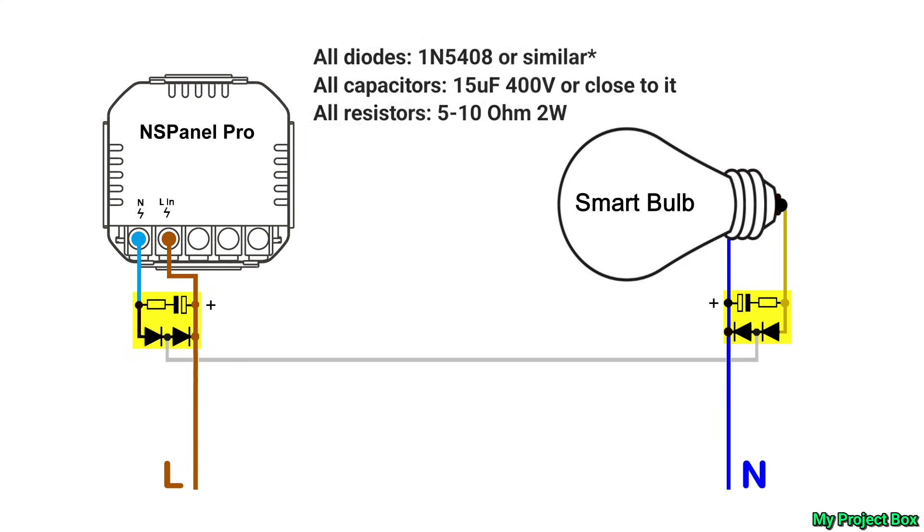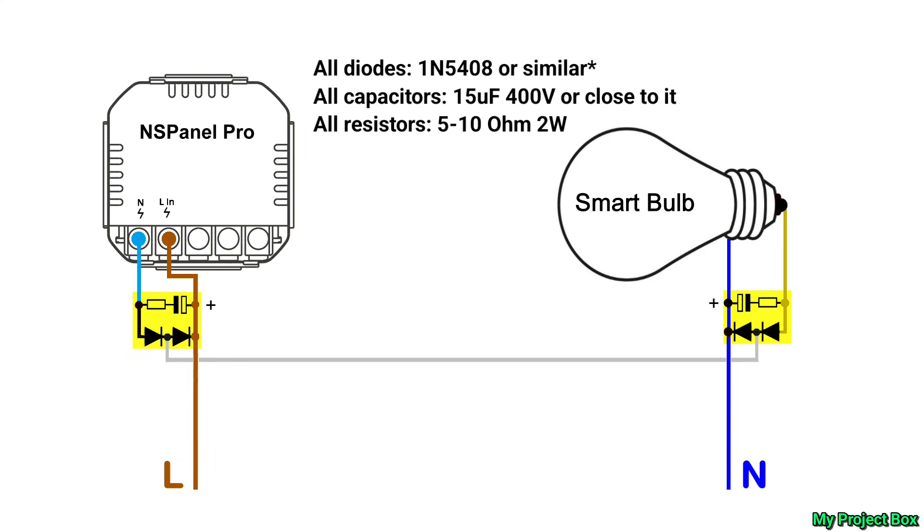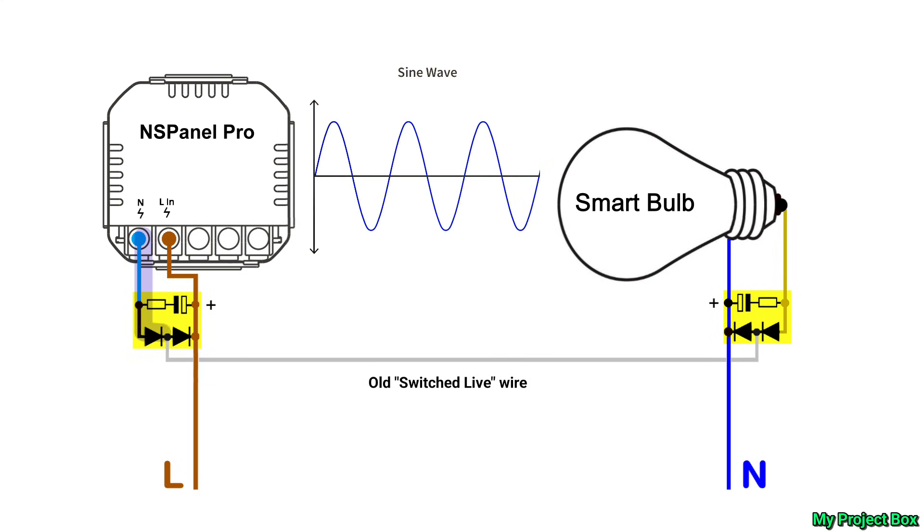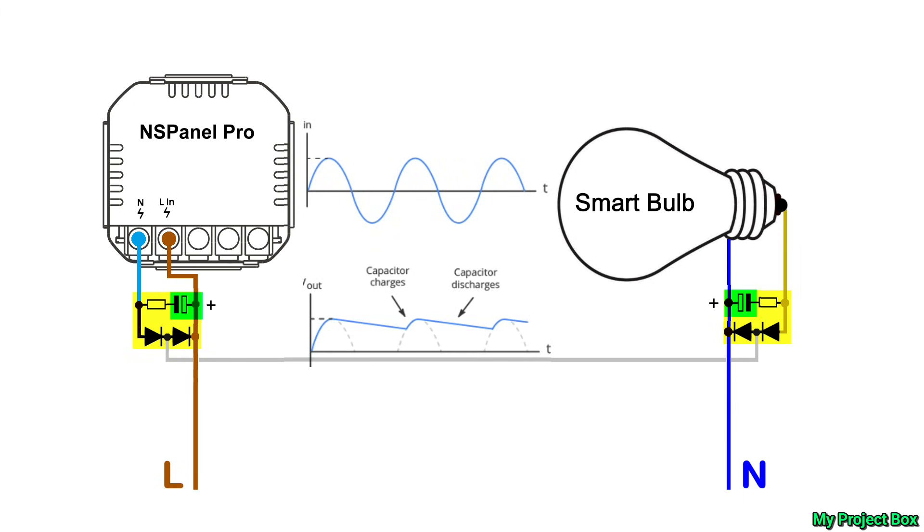Here is my brand new prototype circuit specifically designed for the NS Panel Pro. It allows it to be powered without a neutral behind the switch box. It allows both the smart bulb and the NS Panel Pro to be permanently powered. It works by using a set of diodes to steer one half of the AC sine wave creating the neutral return path back through the old switch live wire back to the smart bulb. The smart bulb gets its permanent supply from the other half of the sine wave in the same way but kind of in reverse in the opposite direction. So now the old switch live wire can supply both the neutral to the NS Panel Pro and the live supply to the smart bulb using alternate halves of the sine wave.